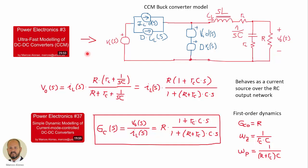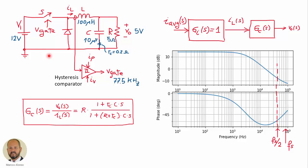We have seen in a previous video — Power Electronics number 3, ultra-fast modeling of DC-DC converters — that in continuous conduction mode we obtained an equivalent circuit from which we can derive the dynamic response of the output voltage versus the current through the inductor, giving a transfer function. We also studied this in video number 37, Simple Dynamic Modeling of Current Mode Control DC-DC converters. Now we are going to control this average inductor current with our input average current injected into the hysteretic comparator.